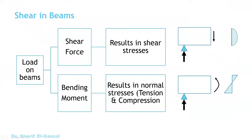Loads on beams will result in some shear forces and also bending moments. The shear force will result in shear stresses. As you can see here, this is a reaction, and then you will have a shear force here. This is the shear stress distribution in the cross-section. For the bending moments, it will result in some tensile forces and compression forces on the cross-section, which will be compression at the top and tension at the bottom part of the beam.